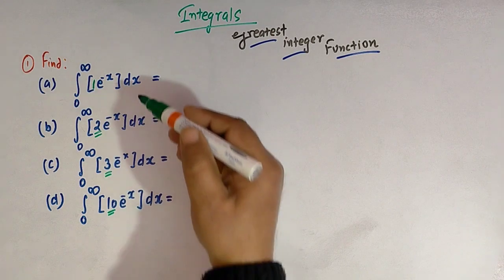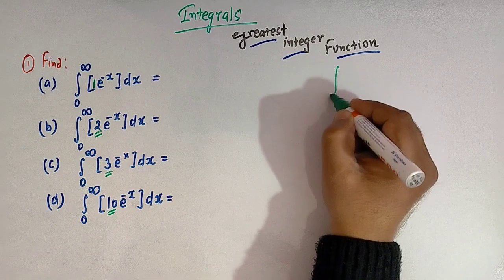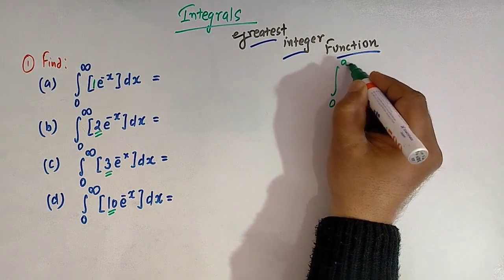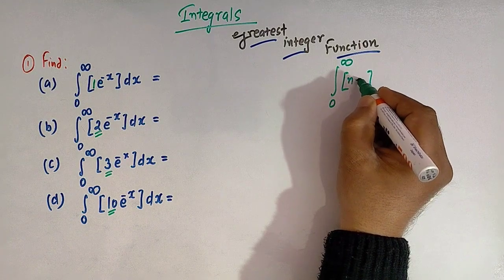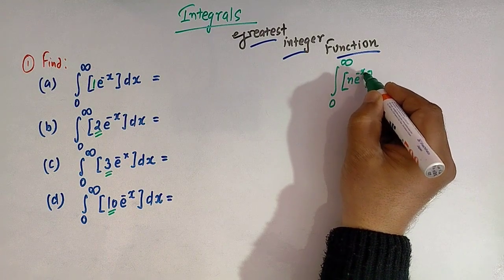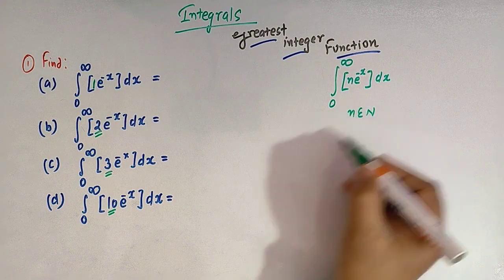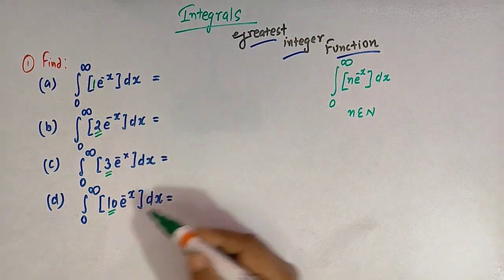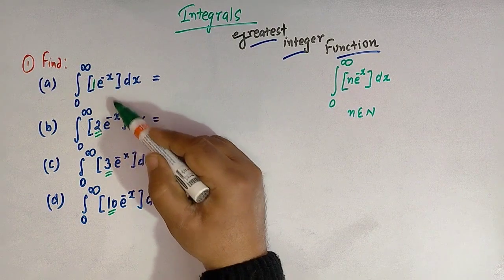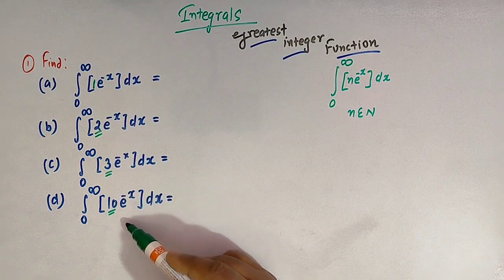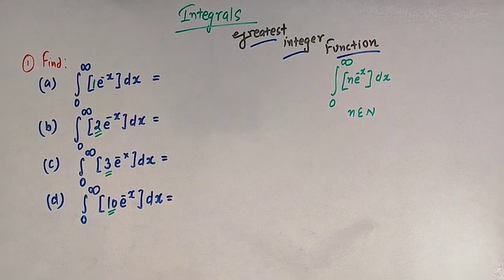So in all these four integrals, we see that each integral is of the form 0 to infinity of the greatest integer of n times e raised to minus x, where n is a natural number. So e raised to minus x is common in all four integrals, and n is the natural number.